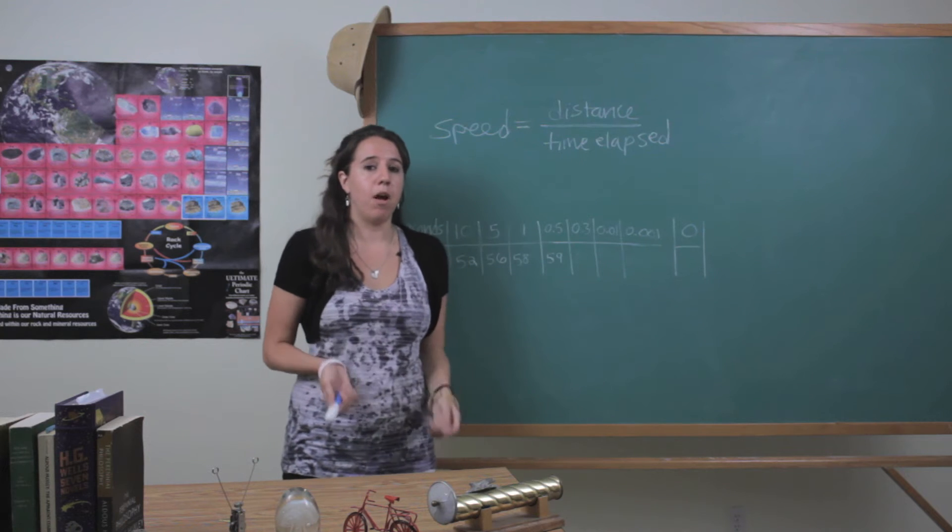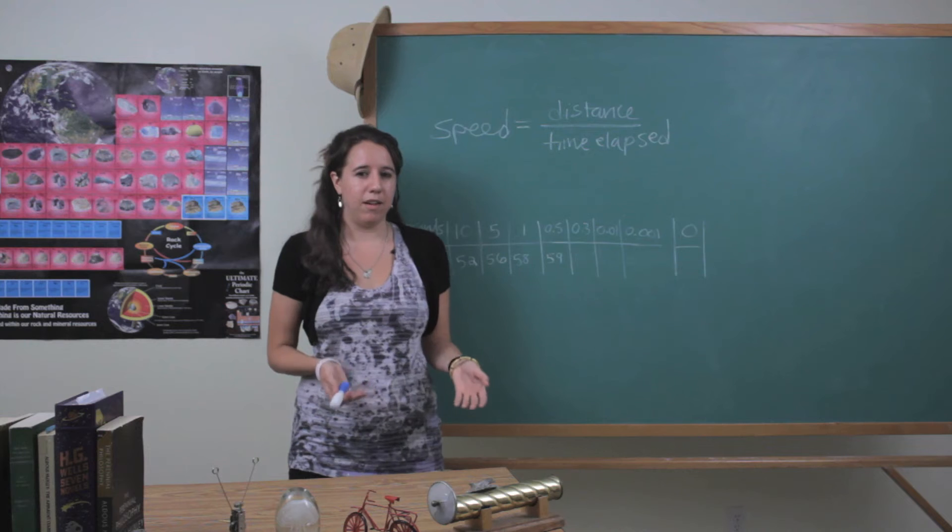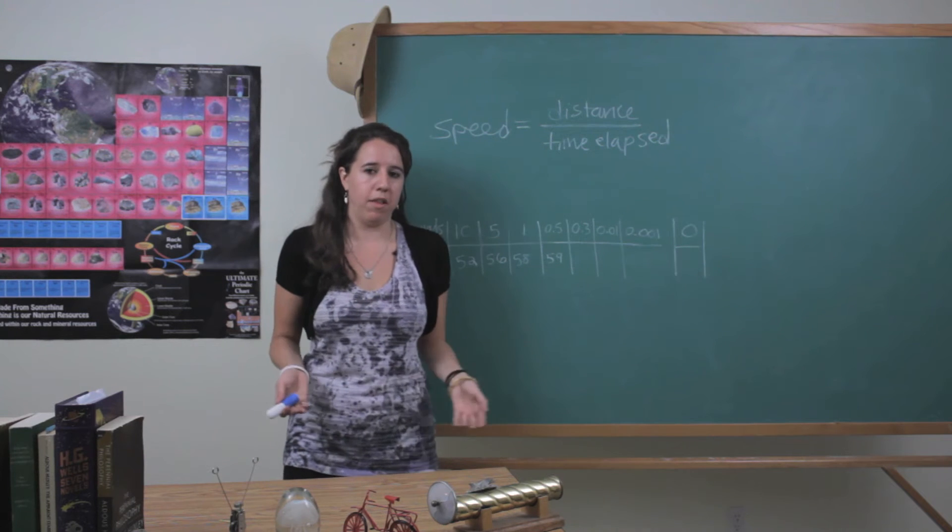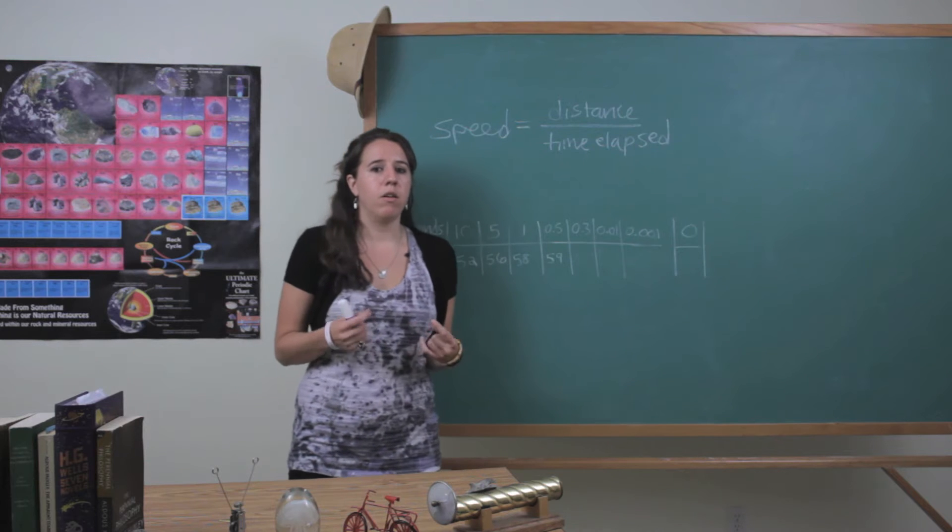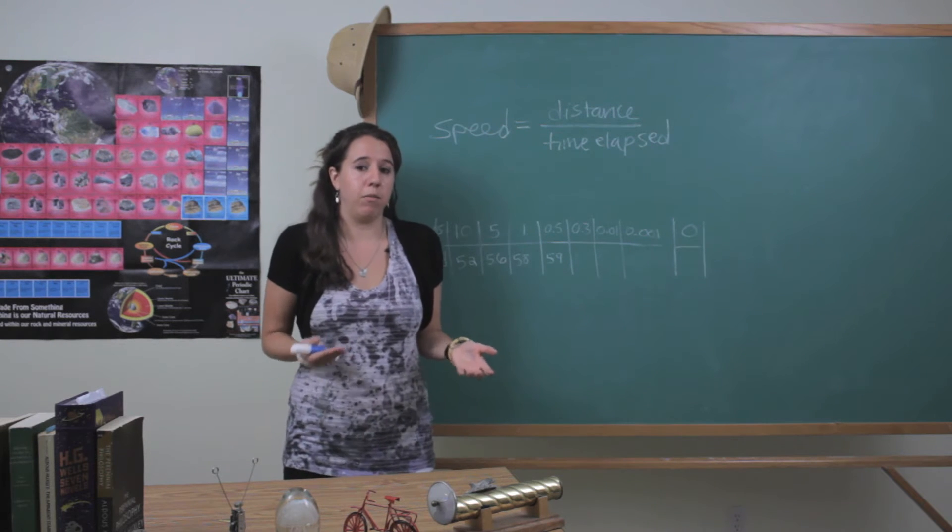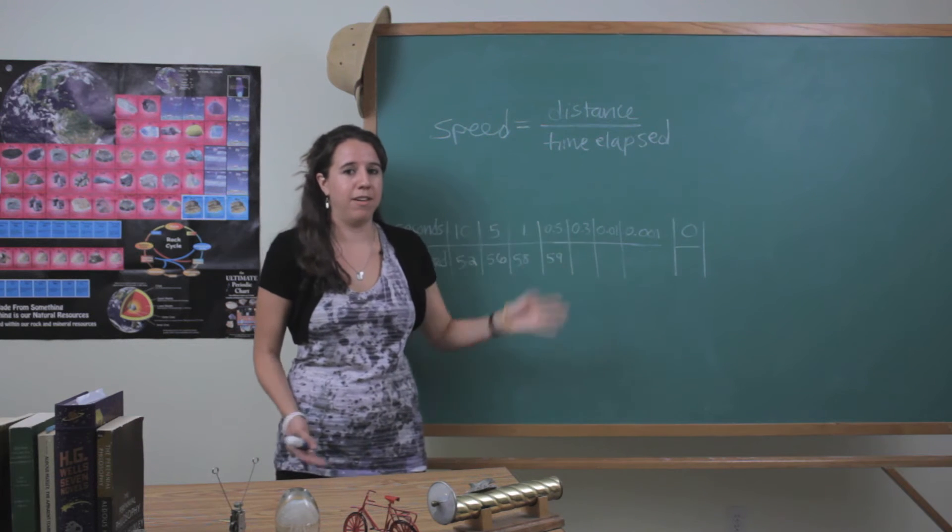But we run into a problem when we talk about instantaneous speed because instantaneous implies that there is no time elapsed and it's a single instant in time. And so we run into a problem because that implies that we would actually be dividing by zero if there's no time elapsed.